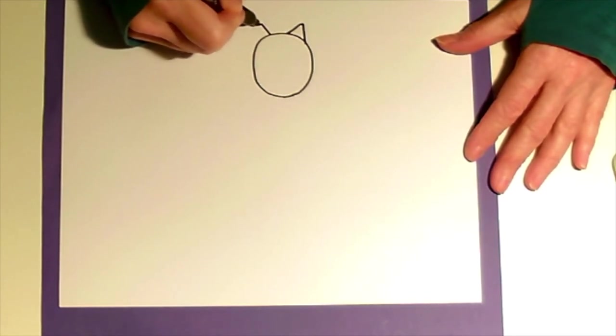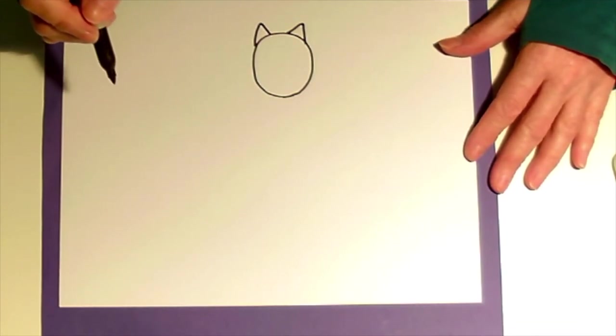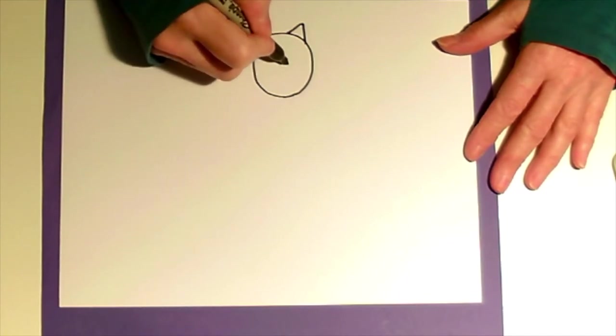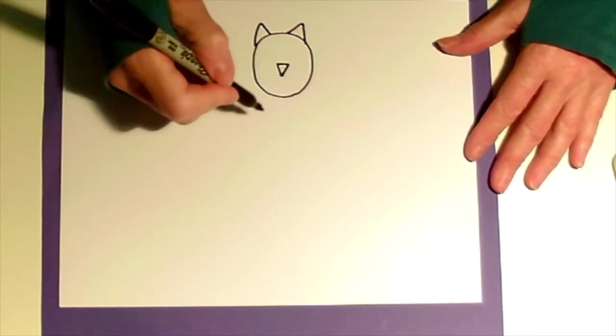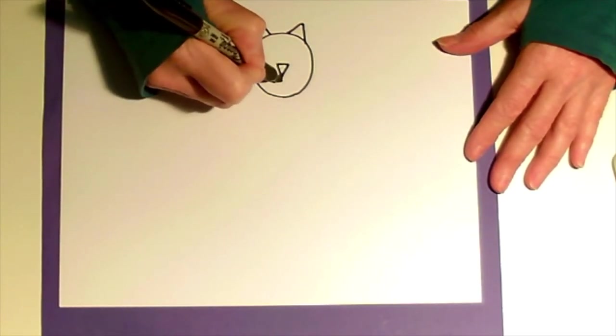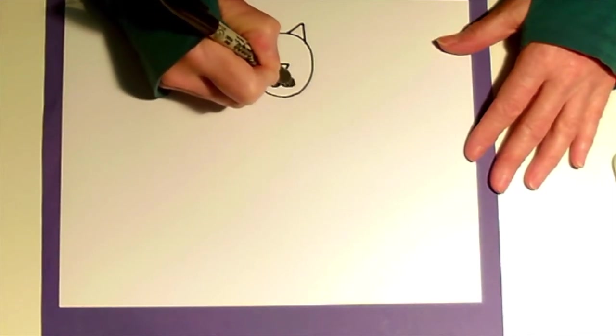Okay, next step I'd like you to do would be a triangle right in the middle of the circle. Come down with a straight line and curve up on one side, go down and curve up on the other side. Those are the cheeks.